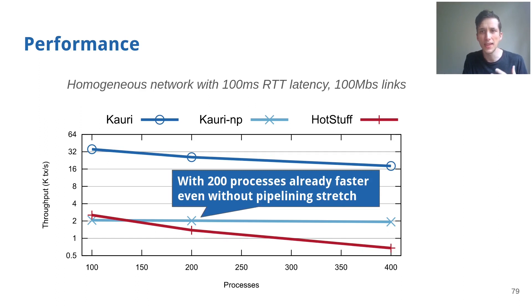We also can see this due to the inherent scalability issues, as HotStuff not only is much worse than Kauri, but even Kauri without pipelining starts performing better above 200 processes and has almost twice the throughput at 400 processes.